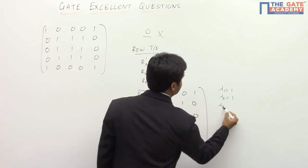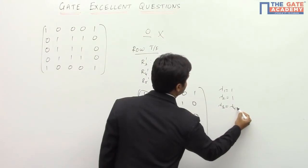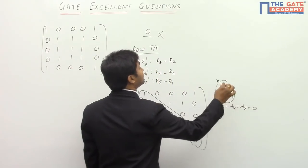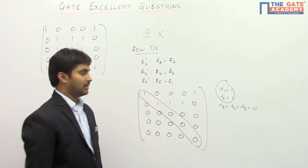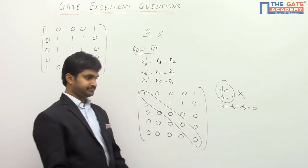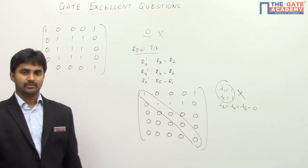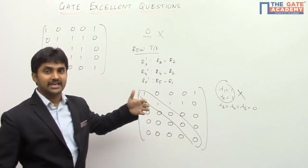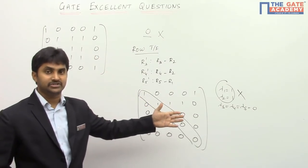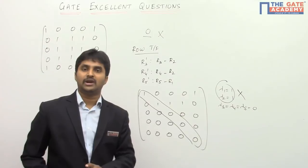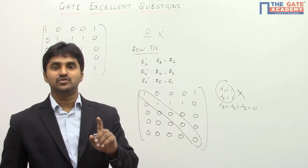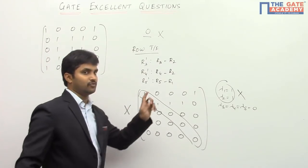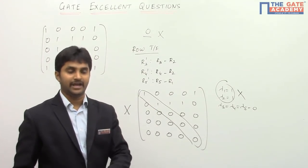After row transformation, students conclude: eigenvalue one is 1, and the third, fourth, and fifth eigenvalues are equal to 0. So the product of non-zero eigenvalues would be 1. However, this is also a mistake — it is not the correct answer. Why? Because whenever you apply row transformation, the eigenvalues of the matrix are going to change. Therefore, you cannot apply row transformation to find the eigenvalues of the matrix.